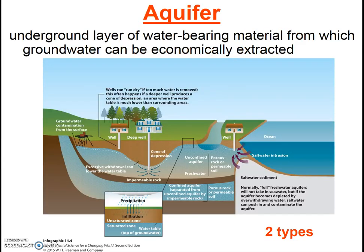Next, let's look at the different types of aquifers. First, a definition: aquifers are the underground layers of water-bearing material from which groundwater can be economically extracted. So not all groundwater would be considered a viable aquifer. Also note that there are two types of aquifers as shown in this diagram: unconfined aquifers and confined aquifers.